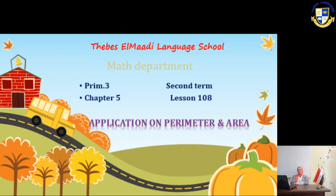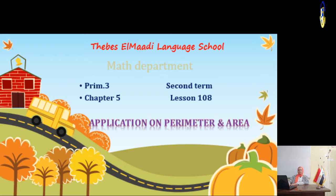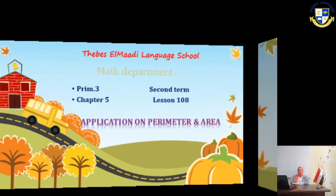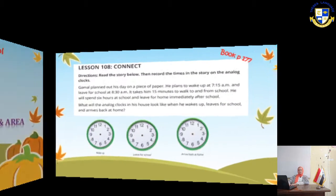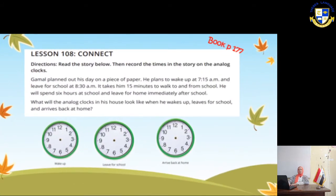Today we are going to take Chapter 5, Lesson 108: Application on Perimeter and Area. Book page 177 — read the story below.